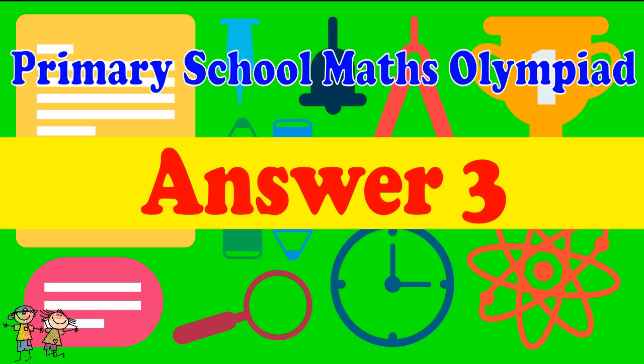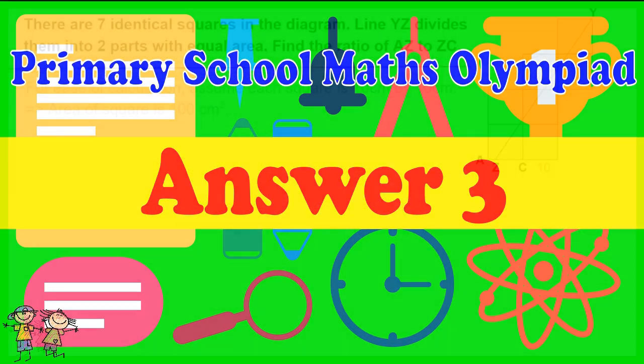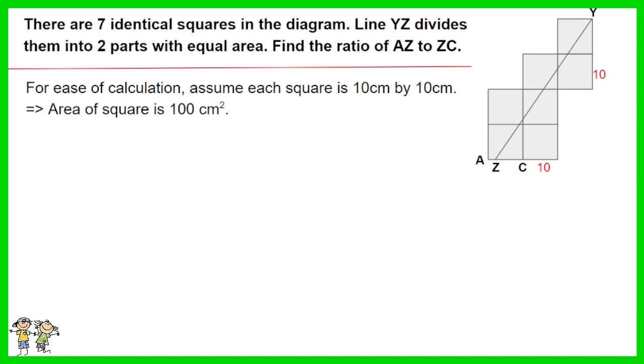Answer for question 3: For ease of calculation, assume each square is 10 cm by 10 cm. Thus the area of each square is 100 cm squared.